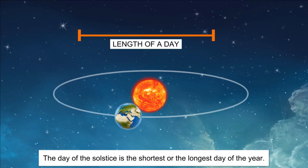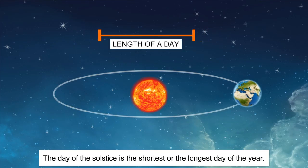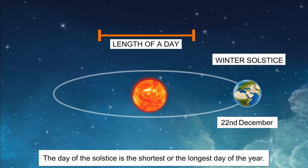The length of the day starts decreasing thereafter. Days in winter continue to shrink until 22nd December in the northern hemisphere. This is the shortest day of the year in the northern hemisphere — it is known as the winter solstice. The length of the day begins to slowly increase after the winter solstice.